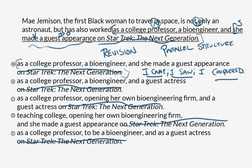So answer A contains an error because it's noun, noun, clause. Whatever we're looking for, we're looking for a list of three items that are all consistent with one another.